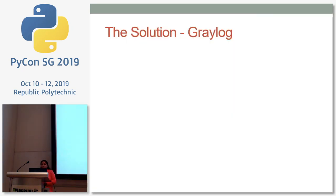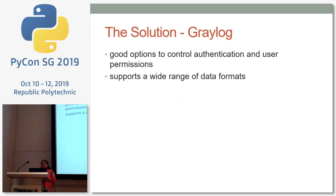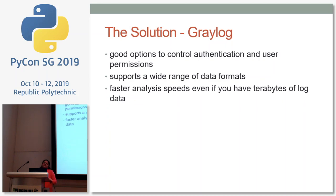The solution which fit my requirement was Graylog. Why did it fit? First of all, it gives me user authentication, which I was not finding in other on-premise installations at the time — though I later figured out it is now available with ELK. It also gives me different kinds of data formats that I can pass. And it was quite fast — as soon as data comes in it appears on the dashboard.